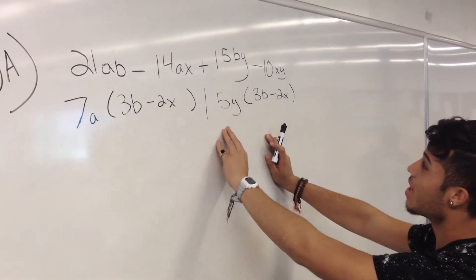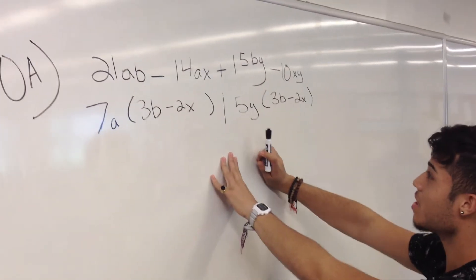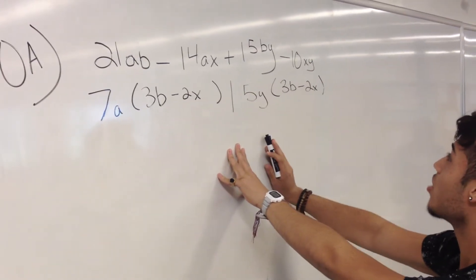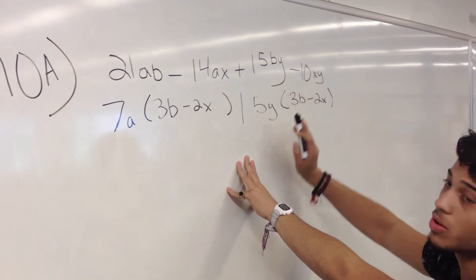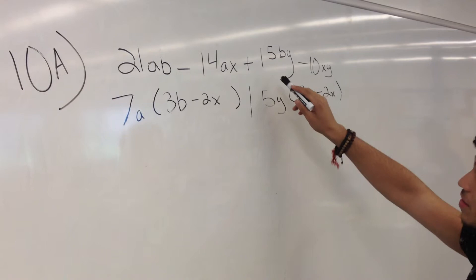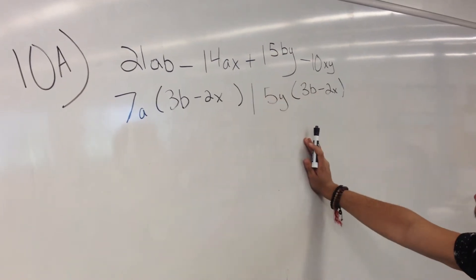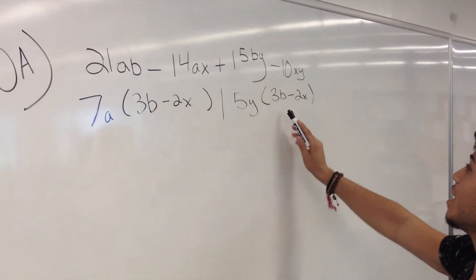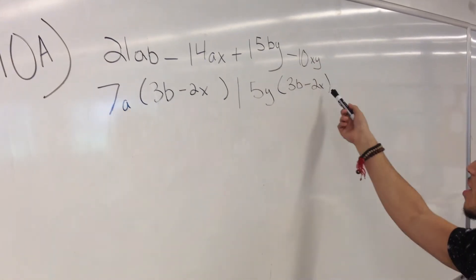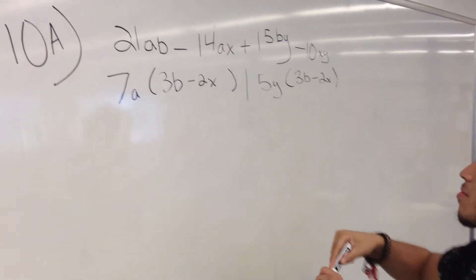Then I go to the other side. I know that 5 is the factor of 15 and 10, so I put 5 on that side. I also see that Y is a factor. 5 goes into 15 three times, and you're left with 3B. Minus, it goes into 10 two times, which is 2X.